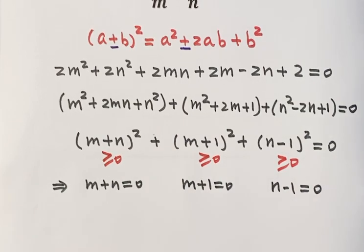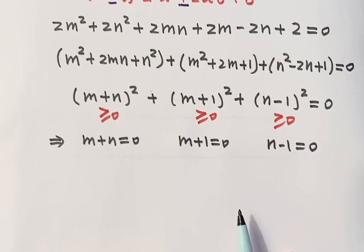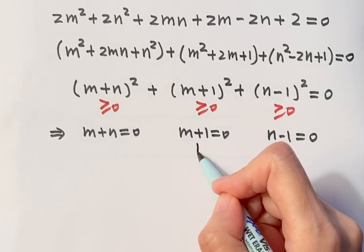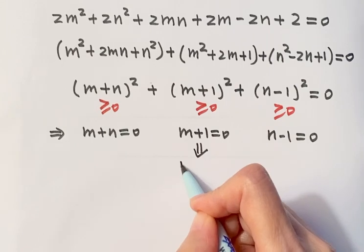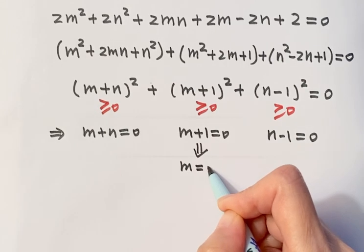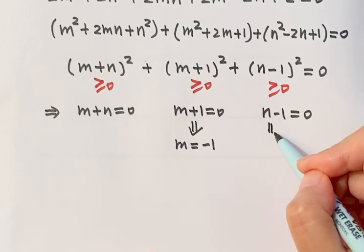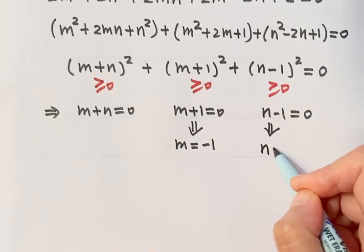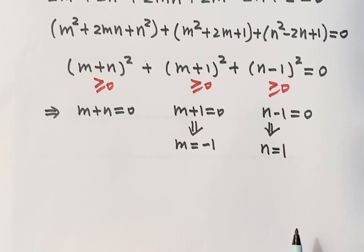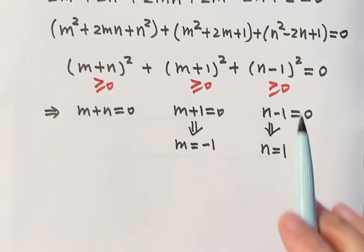Because we are interested in m and n. So that's why from this one, so we have m equal negative 1. From here, n equal 1. So that's why m equal negative 1, n equal 1 is the only solution for this condition.